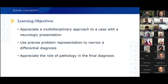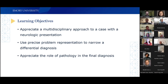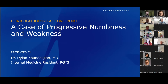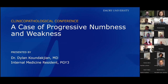I'm going to go quickly through the learning objectives before I hand it over to Dylan. We're going to appreciate a multidisciplinary approach to a case with a neurologic presentation, use precise problem representation to narrow a differential diagnosis, and appreciate the role of pathology in the final diagnosis. At this point, I'll hand it off to Dylan, one of our third-year medicine residents, who will present a case of progressive numbness and weakness.